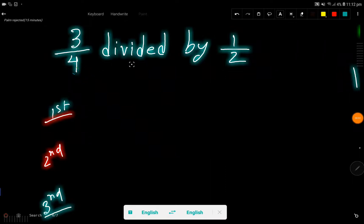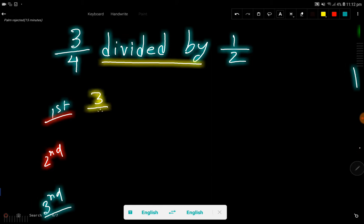3 by 4 divided by 1 over 2. At the first step, I will translate this. So 3 over 4, divided means this sign, then we have half. Division means multiply by the reciprocal fraction.